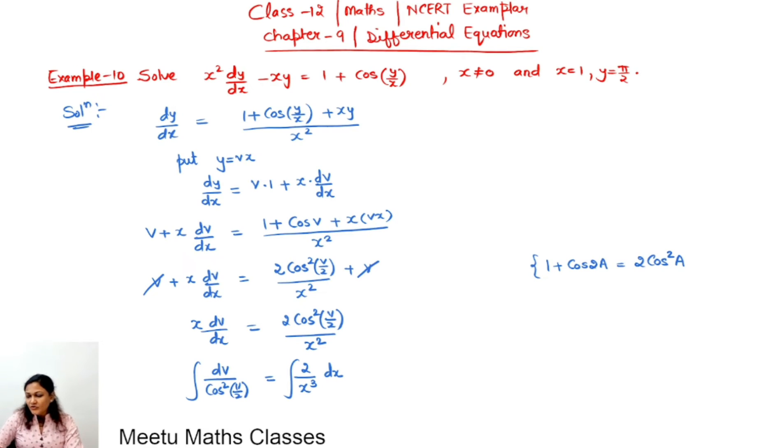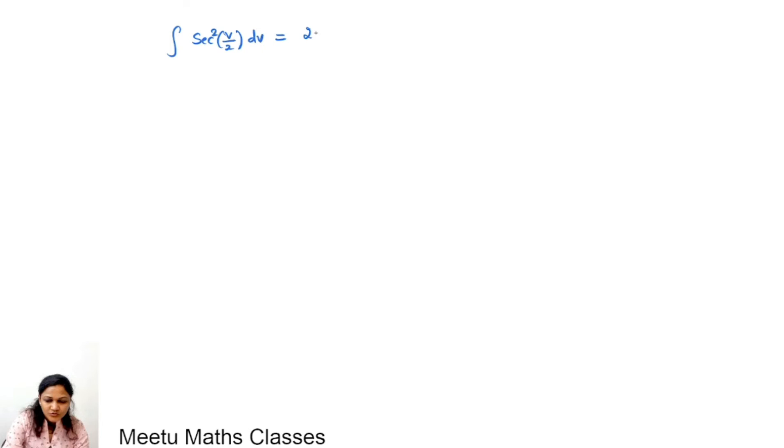This will give you sec square v by 2 dv equals 2 upon x cube. 2 can be taken out, x to the minus 3 dx. Now v by 2 is linear in v, so sec square v ka integral is tan v. And tan v by 2 ke derivative, you can divide by 2. So this will become 2 tan v by 2 equals minus 1 upon minus 2 plus c.